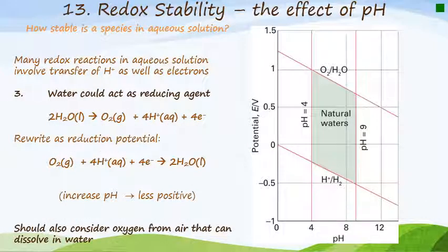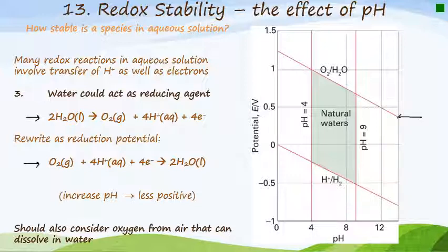When water is oxidized to oxygen, water can act as a reducing agent. We need to turn the oxidation reaction into a reduction potential, written as the second reaction shown here. This corresponds to the upper red line on the graph. You're going to see the same trend: when we have an increase in pH, there is a decrease in potential — a negative slope for the oxidation of water.